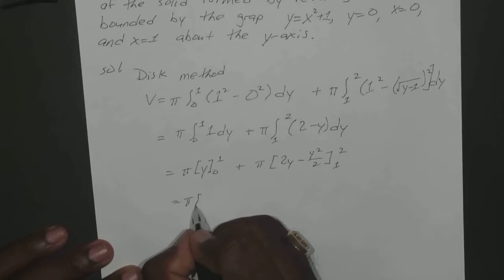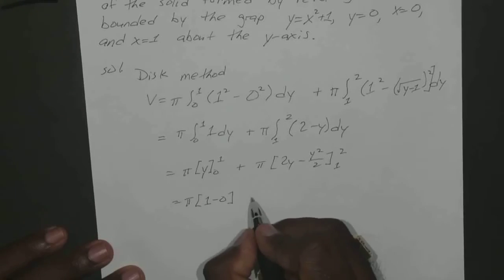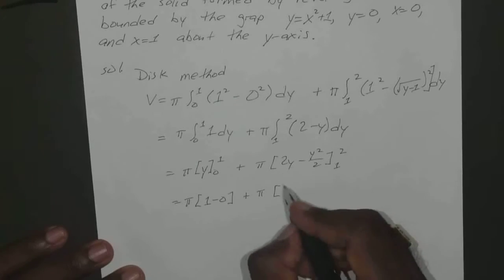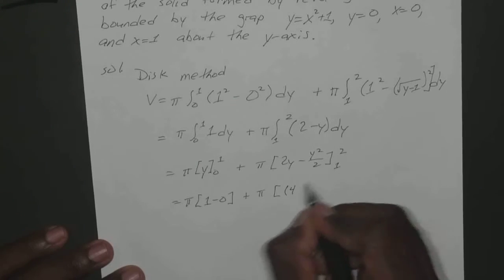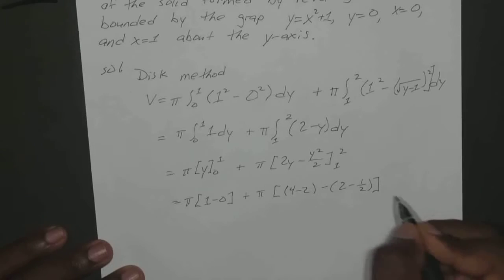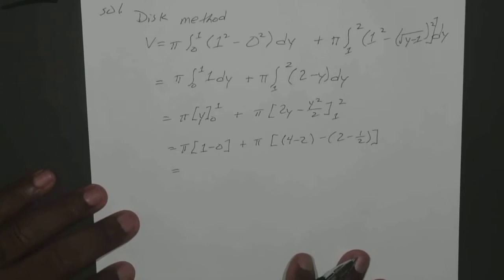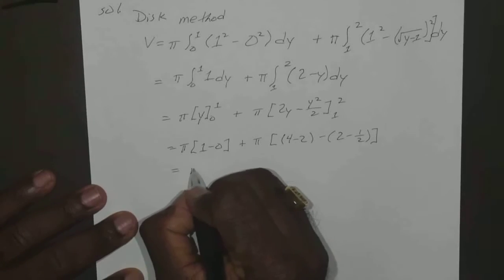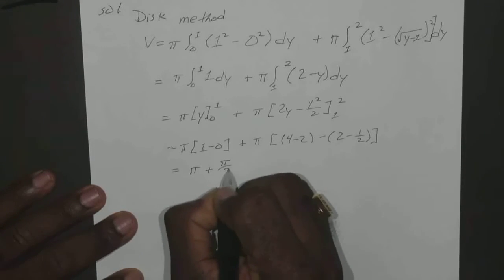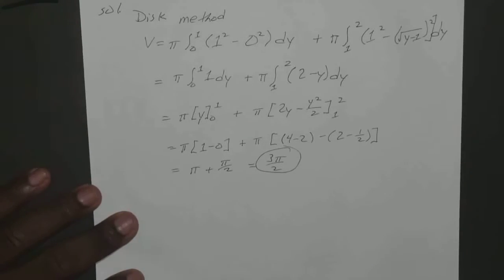So you end up with π from 0 to 1 plus π times 2y minus y squared dy from 1 to 2. Okay, so you end up with π, plug in the 1, plug in your 0 using the fundamental theorem, plus π, plug in the 2, you get 4 minus 2 minus 2 minus 1 half, which gives you π plus π over 2, which if you remember gave us our initial 3π over 2.